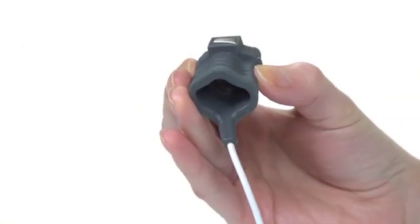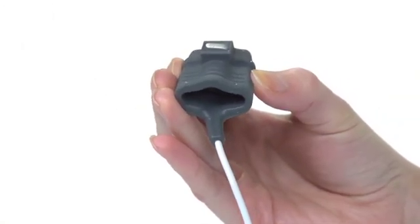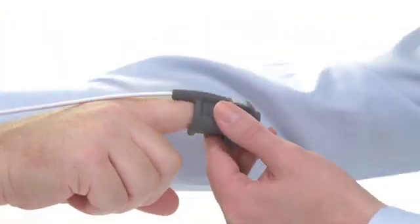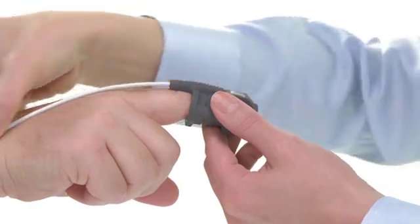Simply give a gentle squeeze on the sides of the sensor to gap it open and insert a clean, dry finger into the end of the sensor. Place the cable to run along the top of the hand toward the wrist.